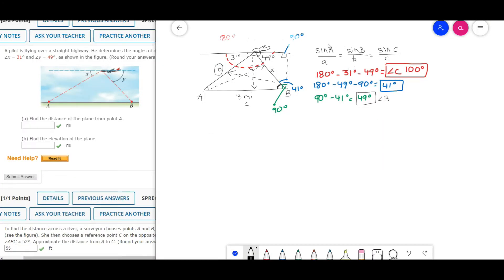I'm going to set this up inversely so it's easier to solve. I'm going to put side B, which is what we want to find, and that corresponds to angle B that's what we just found, so sine of 49 degrees. You're putting the side on top, so side C is 3 over the sine of angle C, which is 100 degrees.